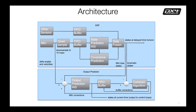This slide is a top-level view of the architecture, covered in more detail in last year's presentation. The IMU data is the key piece of data in the estimator — it provides the prediction for the extended Kalman filter and also for the output predictor. The output predictor uses the latest IMU data to provide a low-latency solution for the kinematic states: attitude, velocity, and position. The extended Kalman filter runs on a delayed time horizon so that it can bring together data with different time delays, data rates, and times of arrival.